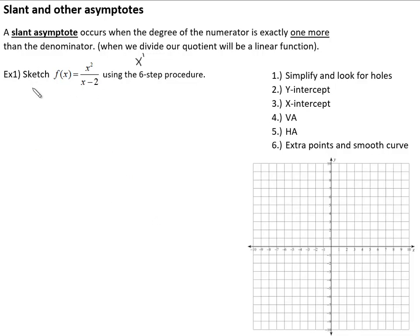Let's try this out. Here's our six steps again for reference: simplify and look for holes, find our y-intercept, x-intercept, any vertical asymptote, any horizontal or other asymptote, and then pick some extra points and draw out our smooth curve. First example: sketch f(x) = x squared over (x minus 2). Because this is a quantity in the bottom, there's not really much simplifying we can do.